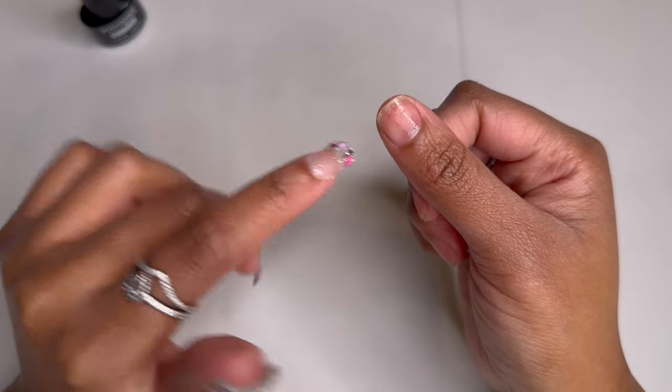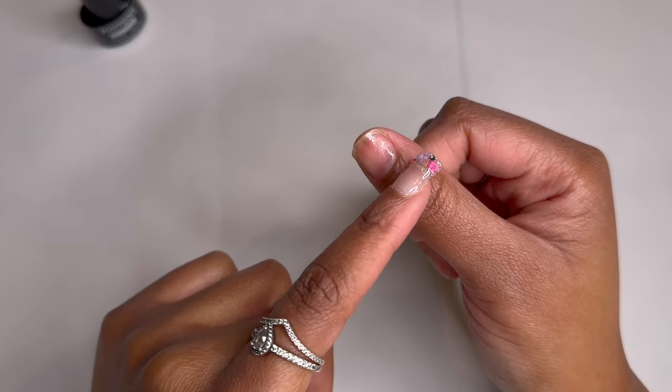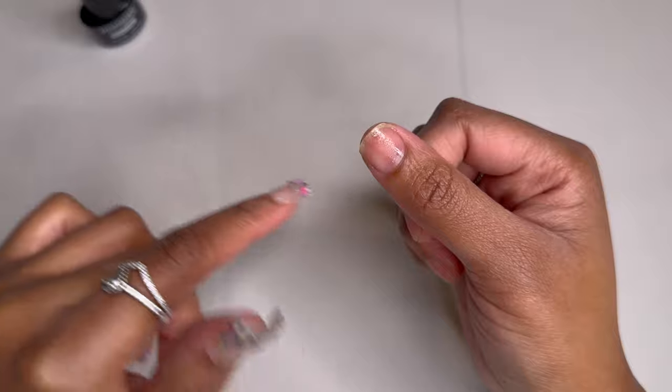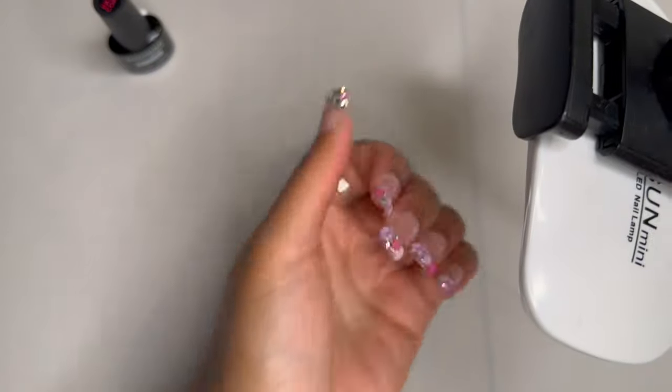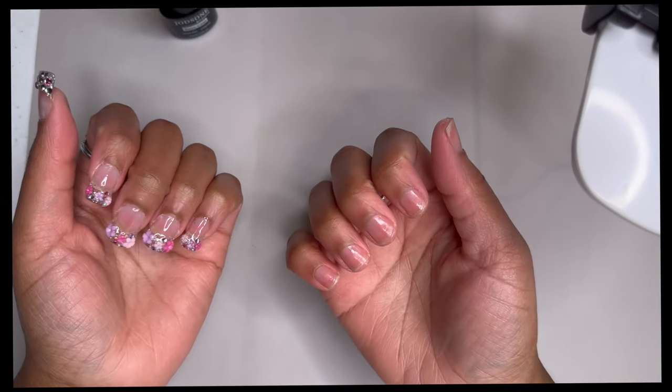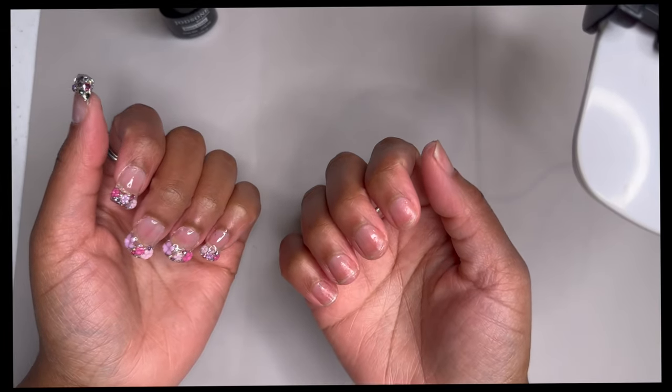When choosing your nail size make sure you are finding a full cover tip that fits side wall to side wall and is not pinching. You will also need your UV lamp which I just have hanging off to the side. So let's get started on application.